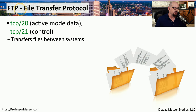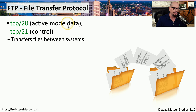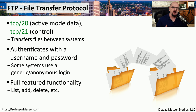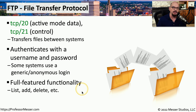Let's start our conversation of port numbers with FTP, or the File Transfer Protocol. As the name implies, this is a protocol that transfers files from one device to another. There are two port numbers used by FTP: TCP port 20 for data transfers, and TCP port 21, which is used to control the data transfer. FTP is a generic way to transfer data between devices, but it commonly requires some type of authentication to log into that remote device — a username and password, although some systems allow anonymous login. FTP also includes file management functions: listing, adding, deleting, renaming, and other operations.